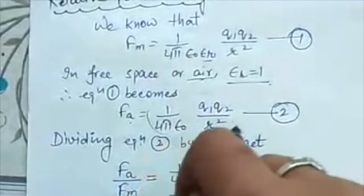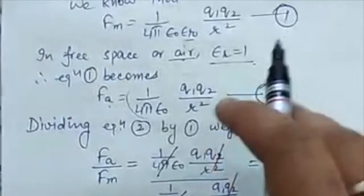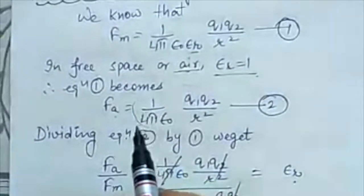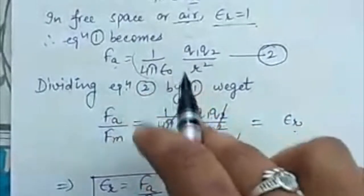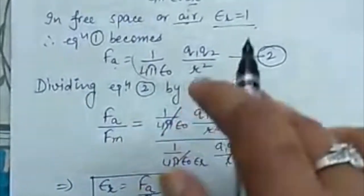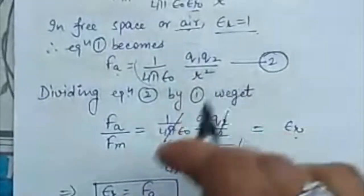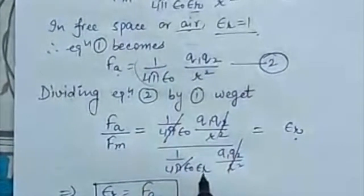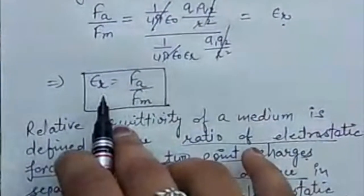Now dividing equation 2 by 1, we get Fa upon Fm that is equal to, use Fa whole value in the numerator divided by Fm whole value in the denominator. After cancellation of all the terms, only epsilon r is left.